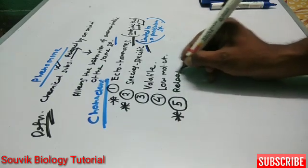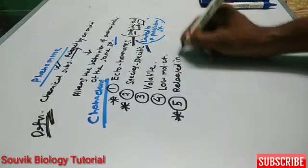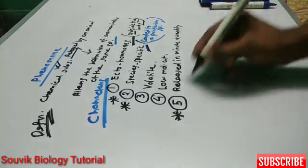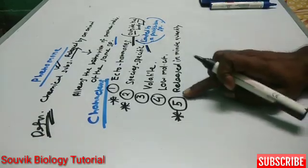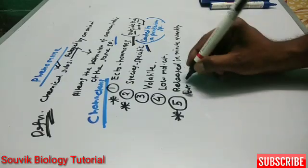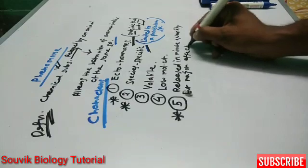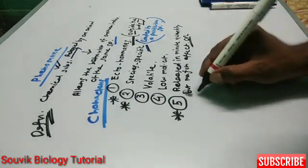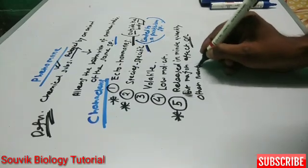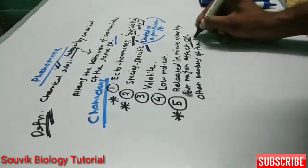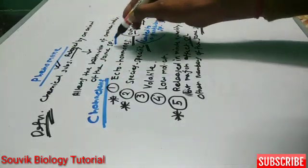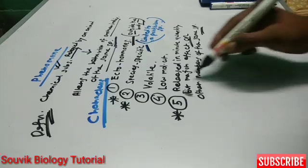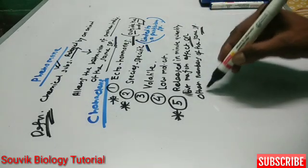Next, pheromones are released in minute quantity, but they have a major effect on other members of the same species — as also stated in the definition: another individual of the same species.